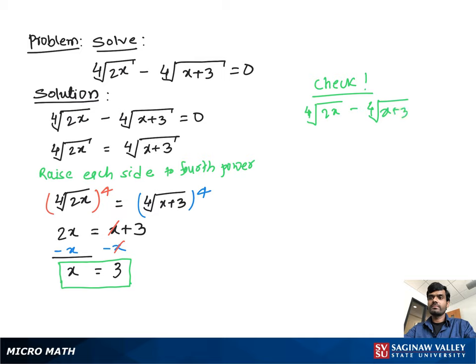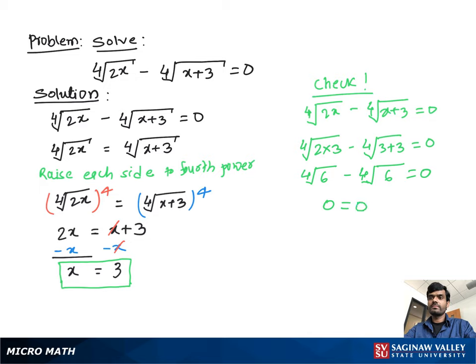So we write: fourth root of 2 times 3 minus fourth root of 3 plus 3 equals 0. That gives us fourth root of 6 minus fourth root of 6 equals 0. As you know, fourth root of 6 minus fourth root of 6 is 0, so 0 equals 0. This confirms that x equal to 3 is the solution of this problem.